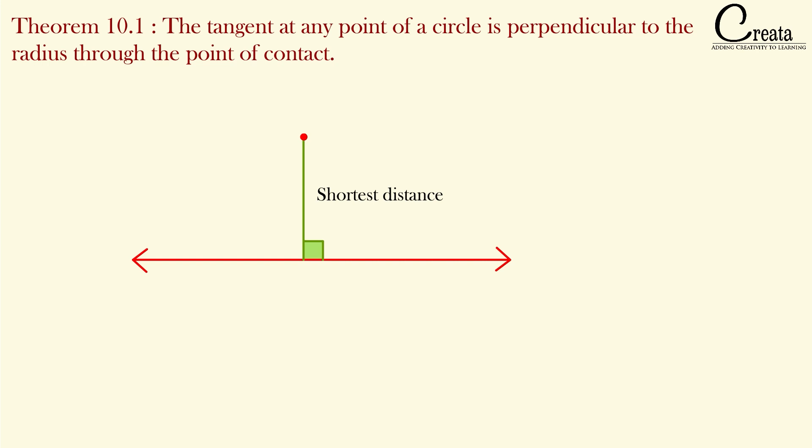The concept is that the shortest distance between a point and a line is perpendicular. Based on this concept, we will solve our theorem. So let's come back to our theorem.